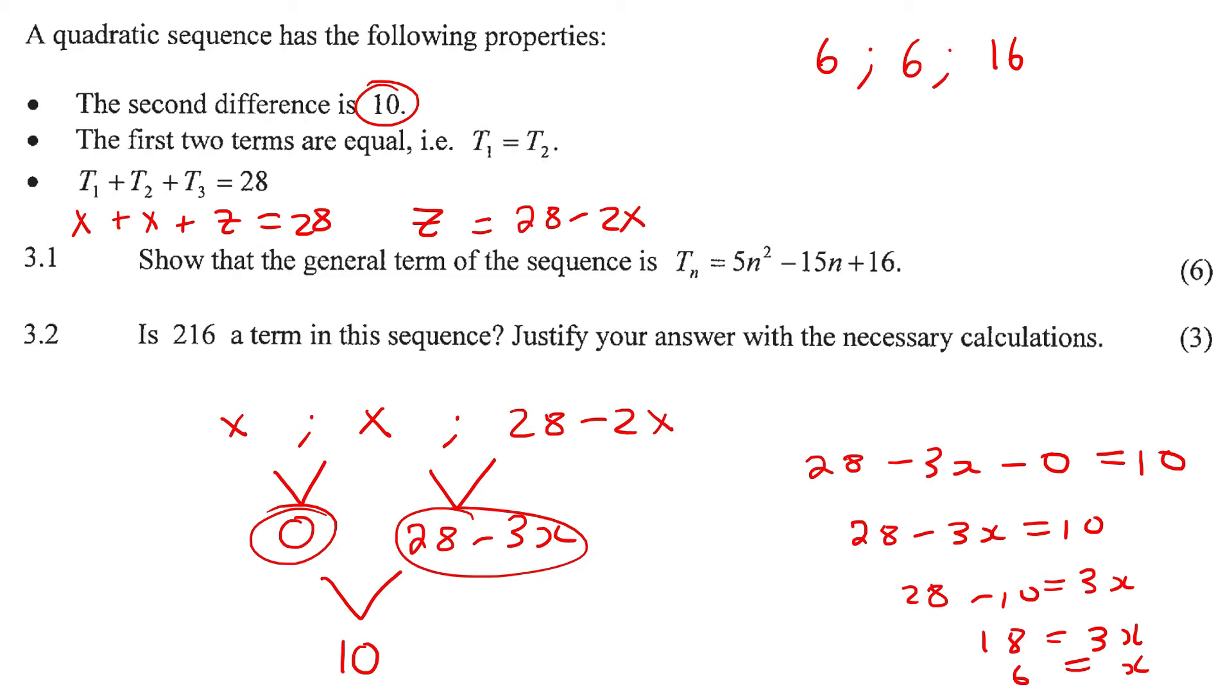Notice how we didn't even look at this nonsense over here. Never take what they want you to prove and use that to work backwards. Now if we know that the difference is zero here, the difference is 10, and the difference is also 10.